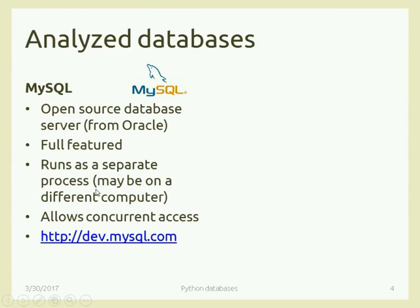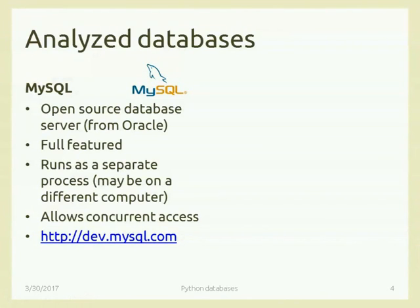In more complex architectures, your Python application could be on one computer and the database server on a different, more powerful machine with more memory and disk space. That only requires connecting them across a local network instead of within the same computer. If you want to download MySQL, go to dev.mysql.com — not www.mysql.com, which leads to the commercial version trying to sell you the enterprise edition. At dev.mysql.com you'll find the MySQL Community Server, which is the open source version.